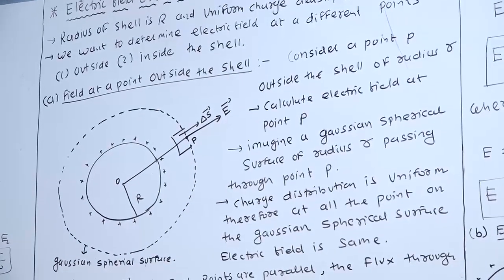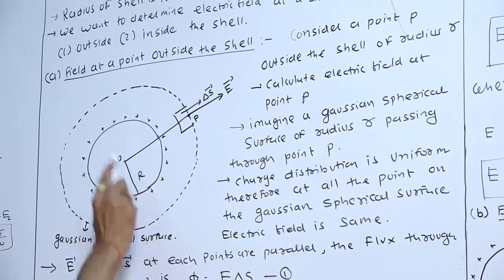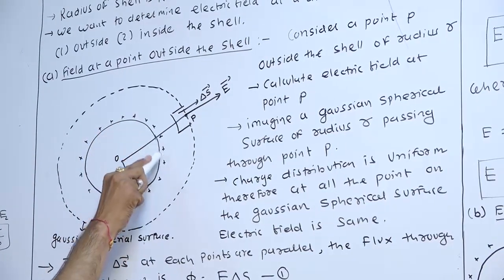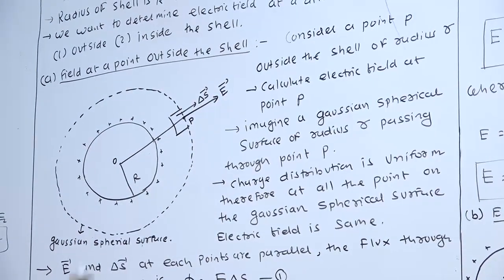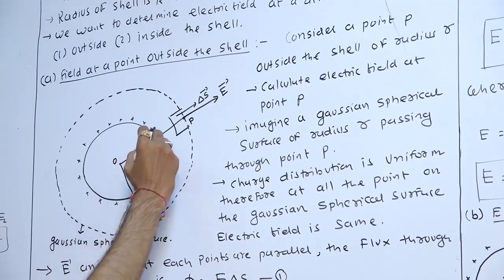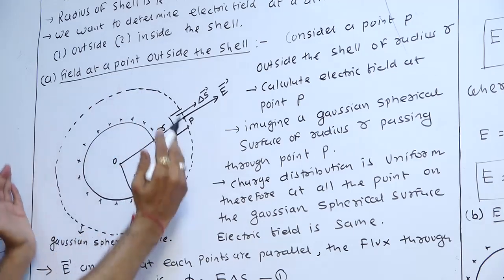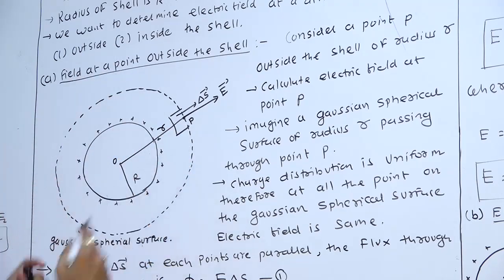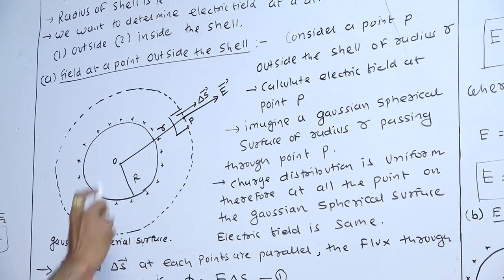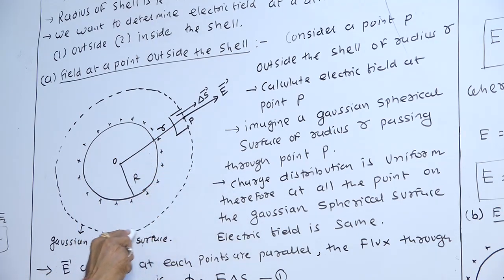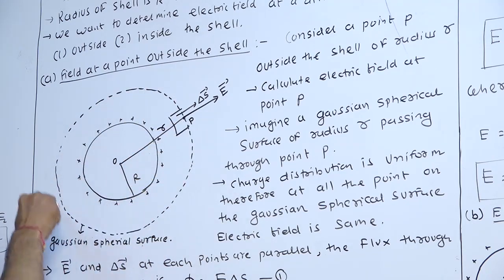First, consider the diagram. This is our spherical shell whose radius is capital R, uniformly charged with positive charge. Therefore, the electric field is radially outward. The dotted line represents our Gaussian surface, called the Gaussian spherical surface, whose radius is small r. All points on the Gaussian surface are at the same distance r; therefore, the electric field is the same at every point.